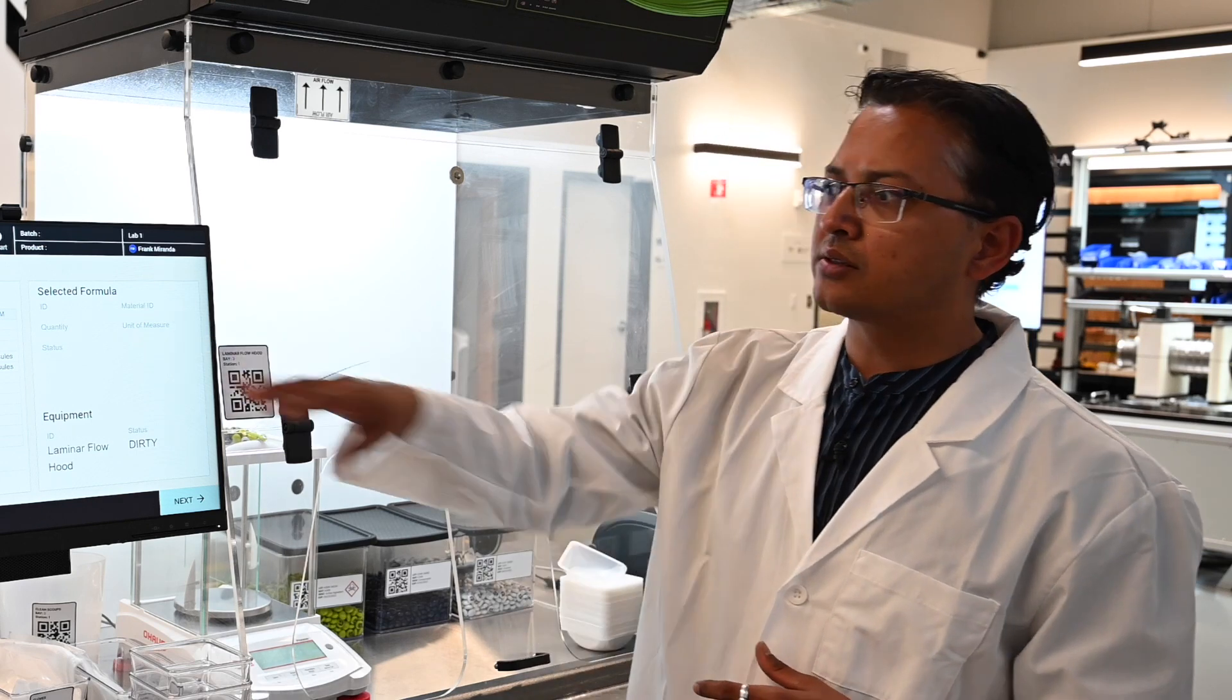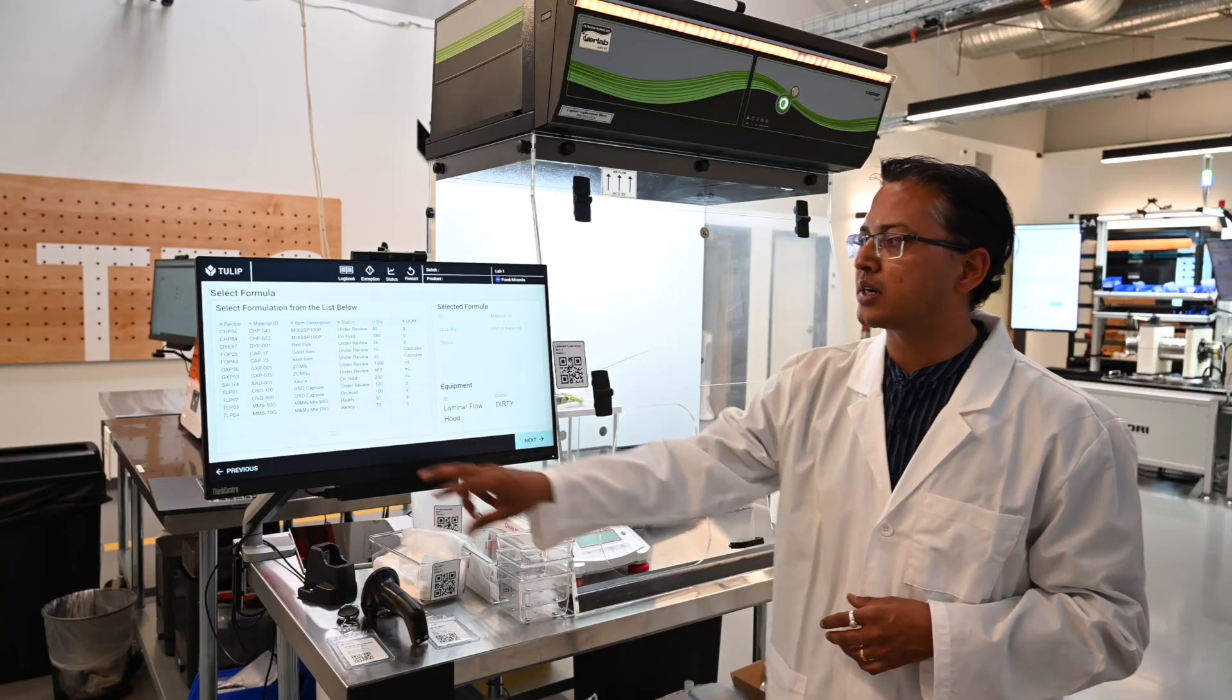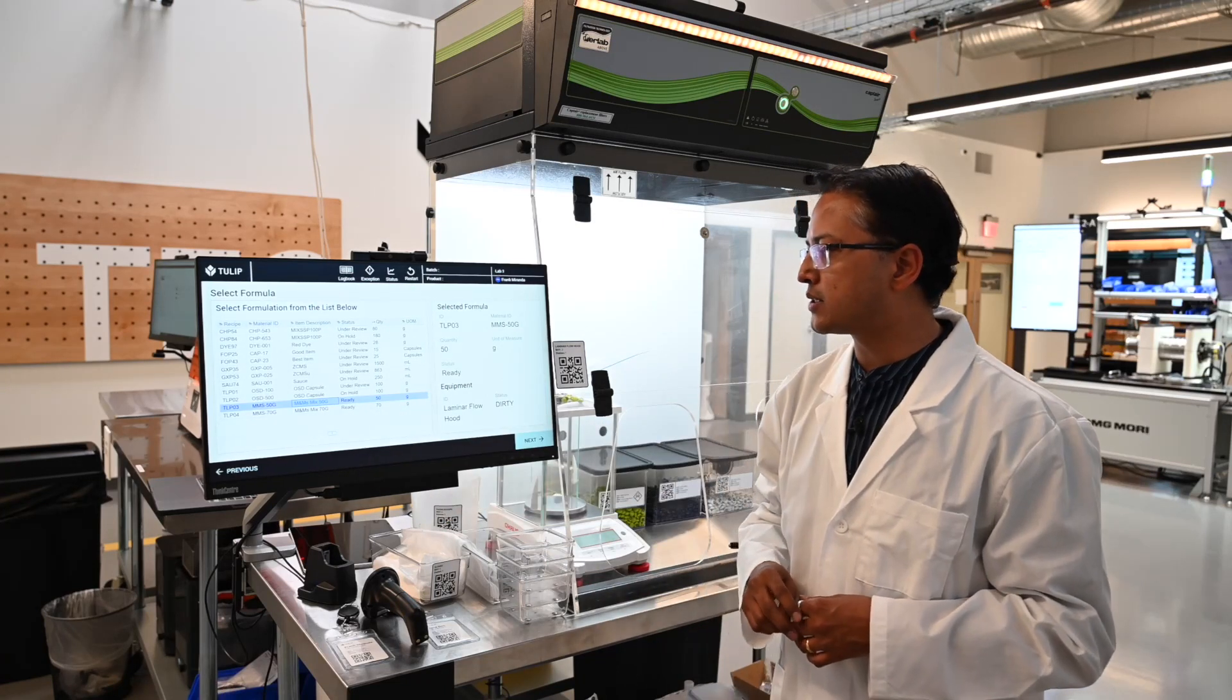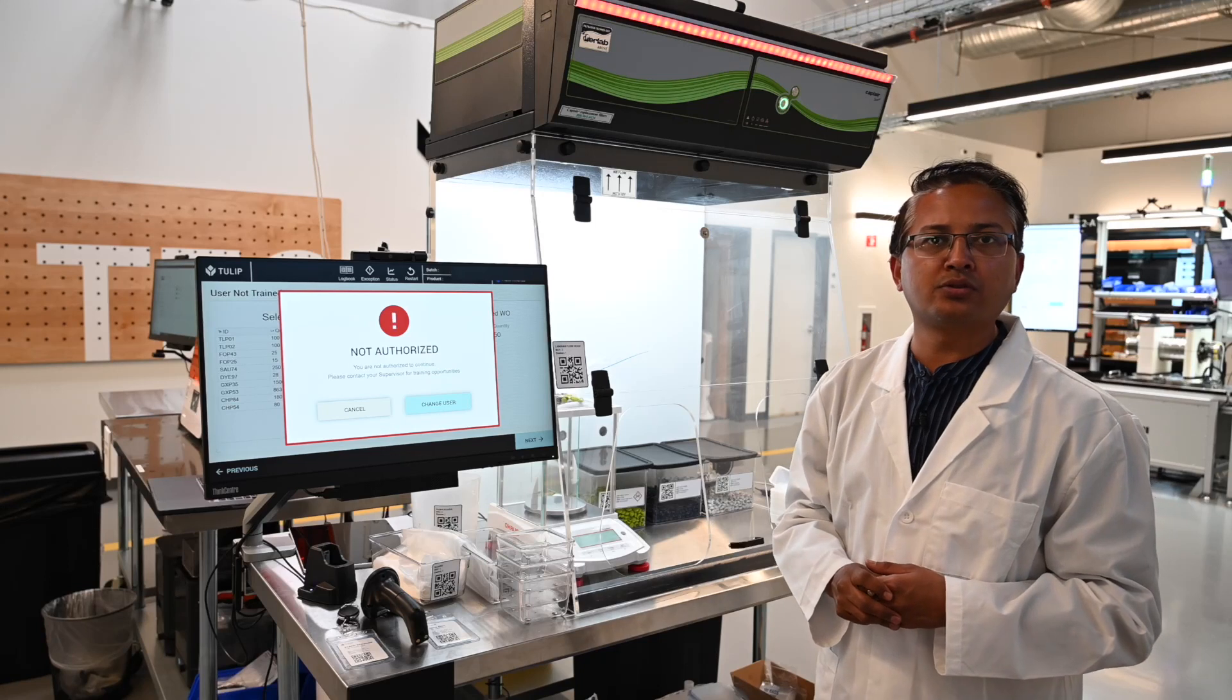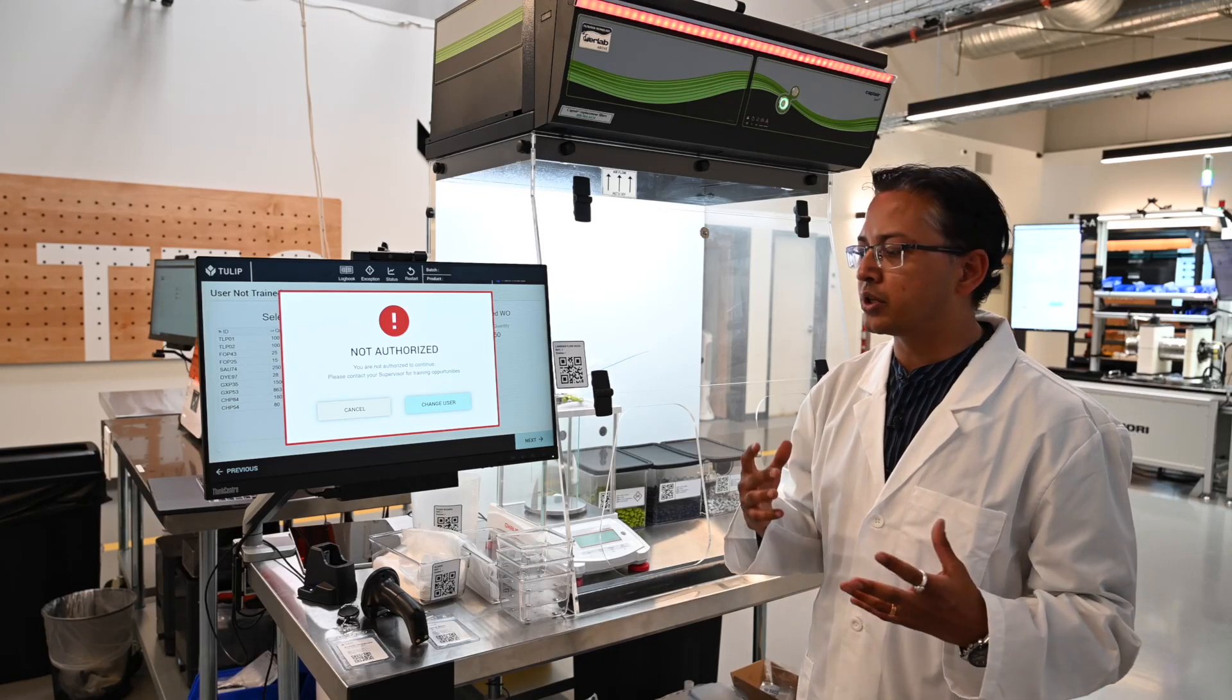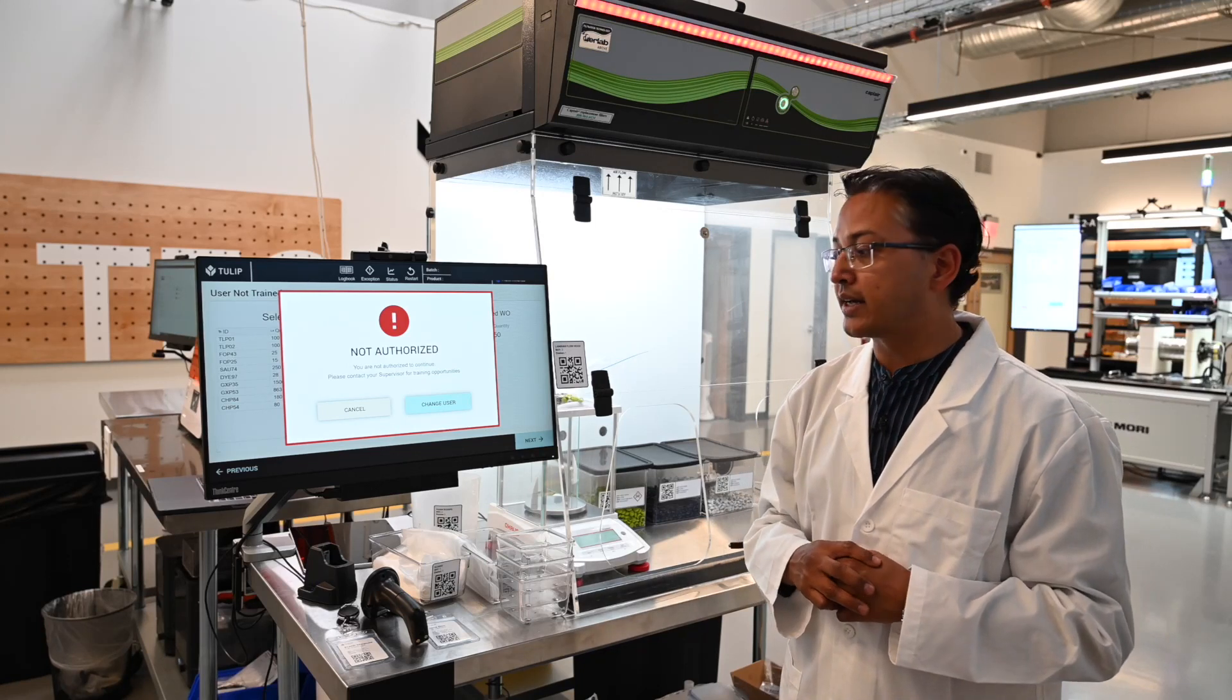On the screen with the Tulip player, I'm able to actually select one of the formulas that I want to execute for my weighing and dispensing and it'll actually give me errors like, hey, you're not authorized to execute this process, so you need to actually check training as well.